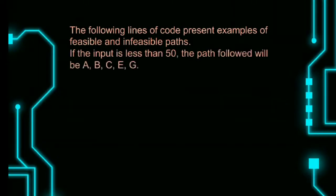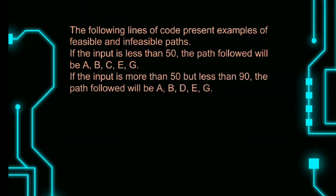The following lines of code present examples of feasible and infeasible paths. If the input is less than 50, the paths followed will be A, B, C, E, G. If the input is more than 50 but less than 90, the path followed will be A, B, D, E, F, G.